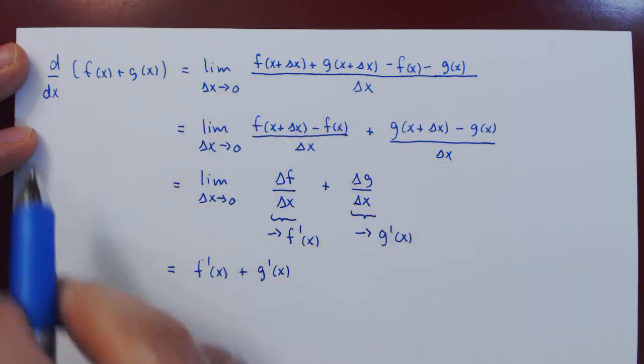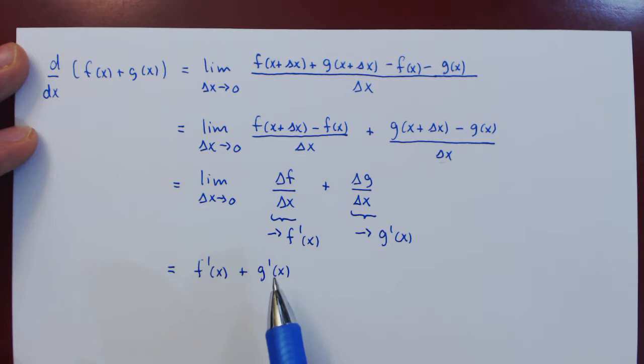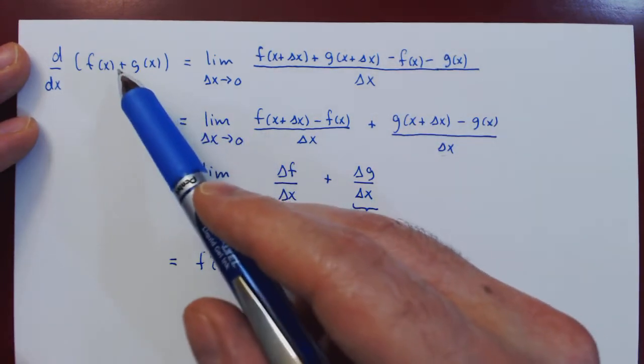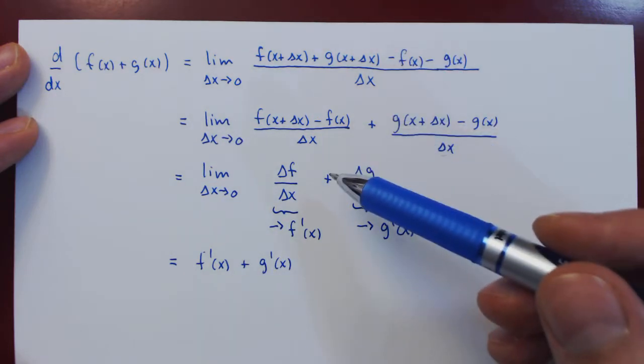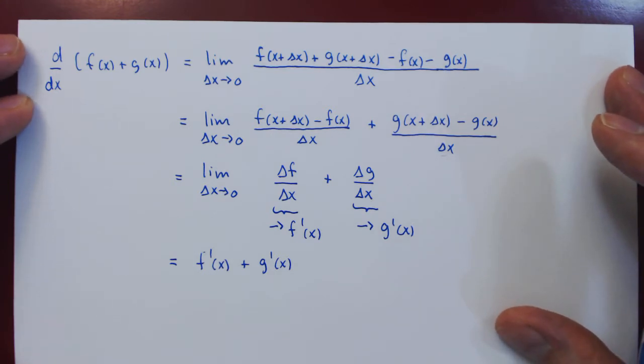So, as we claimed the derivative of f plus g is the derivative of f plus the derivative of g. And you can easily see that if we replace the plus with a minus, then the result will simply be f prime minus g prime. And this completes the proof of the sum difference rule of differentiation.